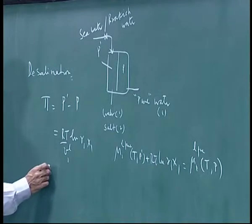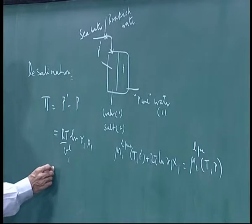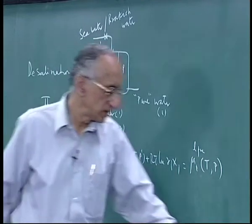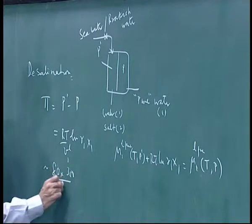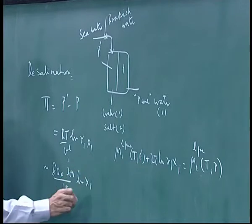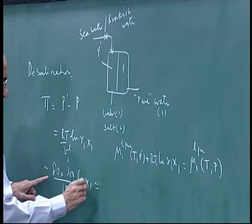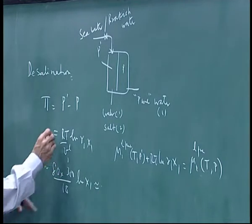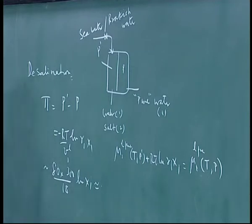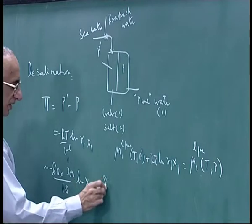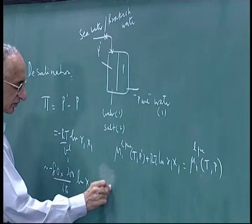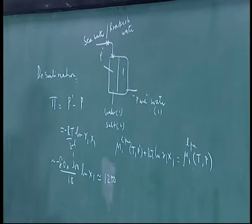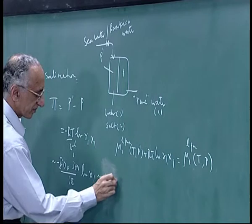We calculated the osmotic pressure. This is typically, if you are working in cc atmospheres, this is typically suppose I should use 80 cc atmospheres, temperature of 300 degrees by 18 into log x1. And log x1 is 1 minus x2, or the log of 1 minus x2, which is minus x2. So there is a minus sign somewhere. This is approximately 80 into 300 by 18, about 1250, 1300 if you like, into x2.